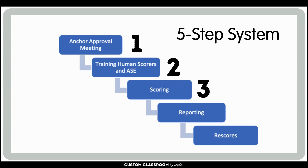Third is scoring. All the constructed response questions for the English version of STAAR are going to be scored using this ASE hybrid model with human scorers. A subset of the responses will be routed to human scoring for a second opinion, especially any that have conditional codes or low confidence scores from the ASE.